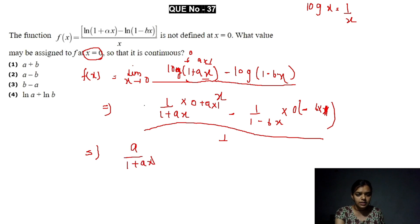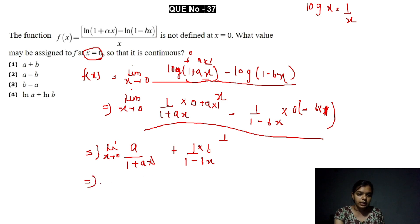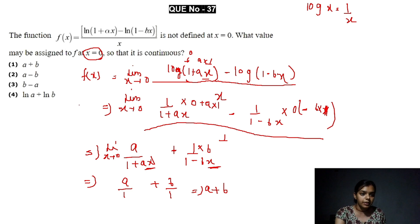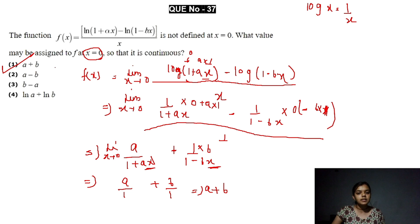Now putting x = 0, we get a/1 + b/1 = a + b. So the value a + b will make the function continuous. The answer is: assign f(0) = a + b so that the function is continuous at x = 0.